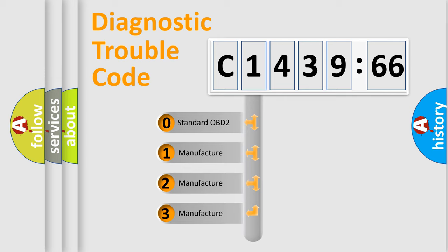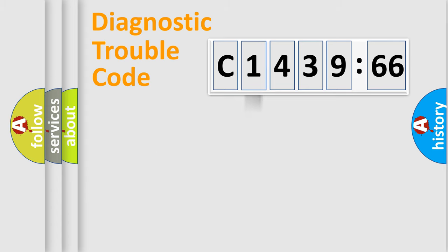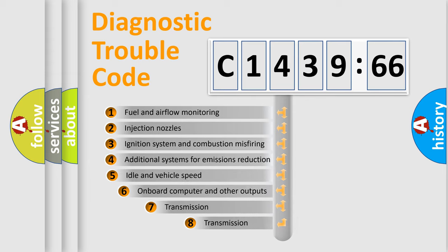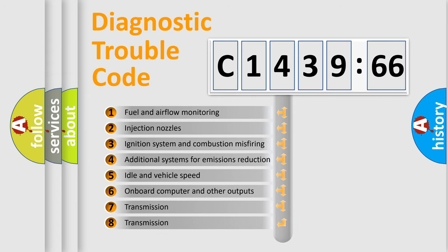This distribution is defined in the first character code. If the second character is expressed as zero, it is a standardized error. In the case of numbers 1, 2, 3, it is a more precise expression of the car specific error.